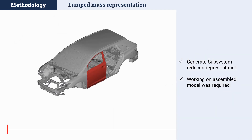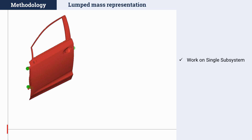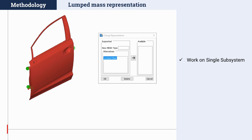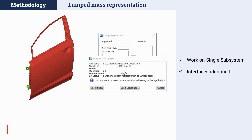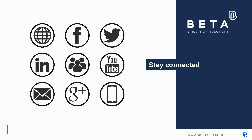Last but not least, we have new development in the generation of reduced subsystem representations. In previous ANSA versions, it was required to work on the full assembly in order to generate the landmass representation of a subsystem used in the module. ANSA version 21 enables working on a standalone single subsystem with marked interfaces using assembly and load case points. In this case, the landmass generation wizard will properly identify the interface points for the attachment of the rigid elements, leaving the interface points intact. Thank you for your attention and, as always, stay connected!